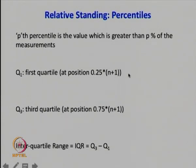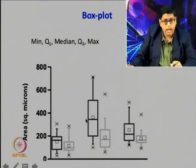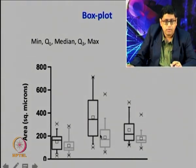The first quartile represents the 25th percentile, the third quartile represents the 75th percentile, and the interquartile range is defined as Q3 minus Q1. Using these values, one can plot what is called a box plot. In a box plot, the lowest value is your minimum, then the box outlines Q1 (first quartile), Q2 or the median, Q3 or the third quartile, and the maximum.